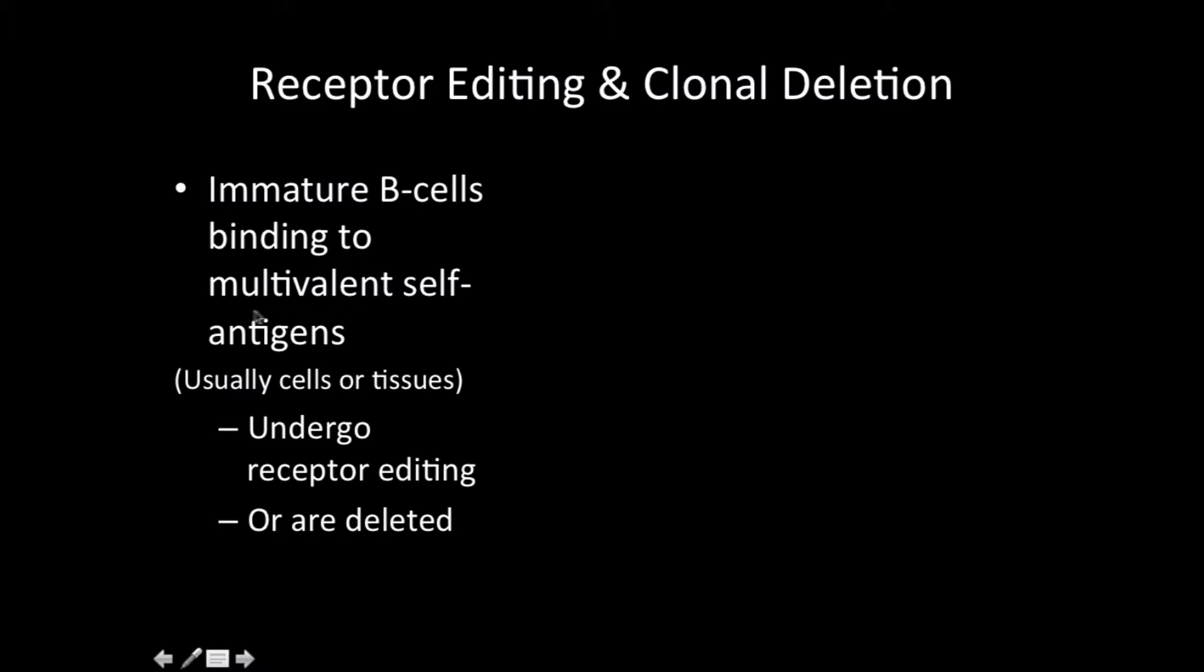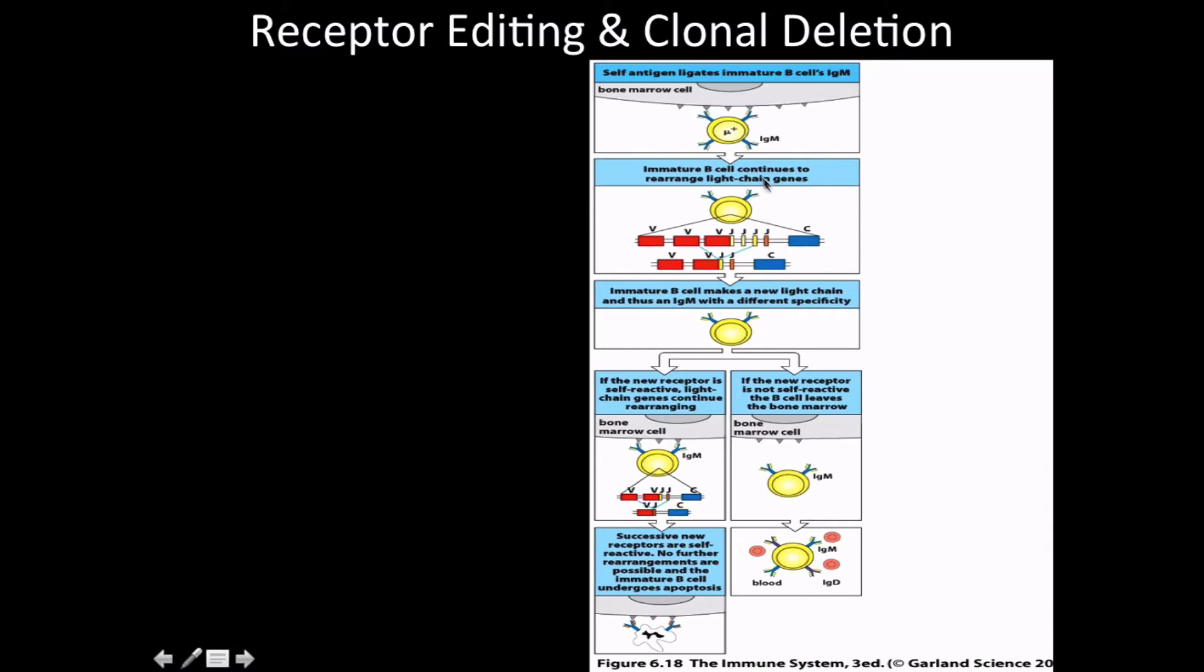Immature B-cells binding to multivalent self-antigens, usually cells or tissues, will undergo receptor editing or be deleted. We want to try to save these guys. So in this diagram, self-antigen ligates the immature B-cell's IgM. The immature B-cell will continue to rearrange its light chain genes - this is receptor editing. Hopefully we can get something going. The immature B-cell makes a new light chain and thus an IgM with a different specificity.